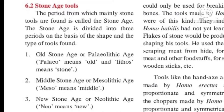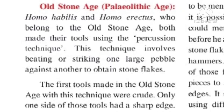First is the Old Stone Age or Paleolithic Age. Homo habilis made tools using the percussion technique, which involves beating or striking one large stone against another to obtain stone flakes. Types of tools made include choppers with a sharp edge on one side, used for breaking nuts and bones. He also used the stone flakes produced while shaping tools for scraping meat from the hide of animals, for chopping meat and other foodstuff, and for sharpening wood sticks.